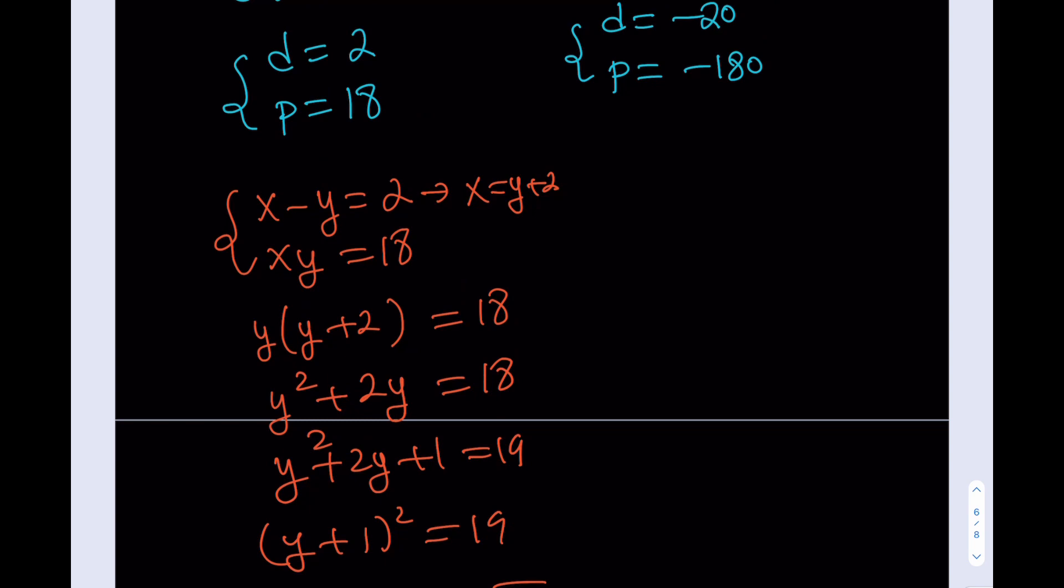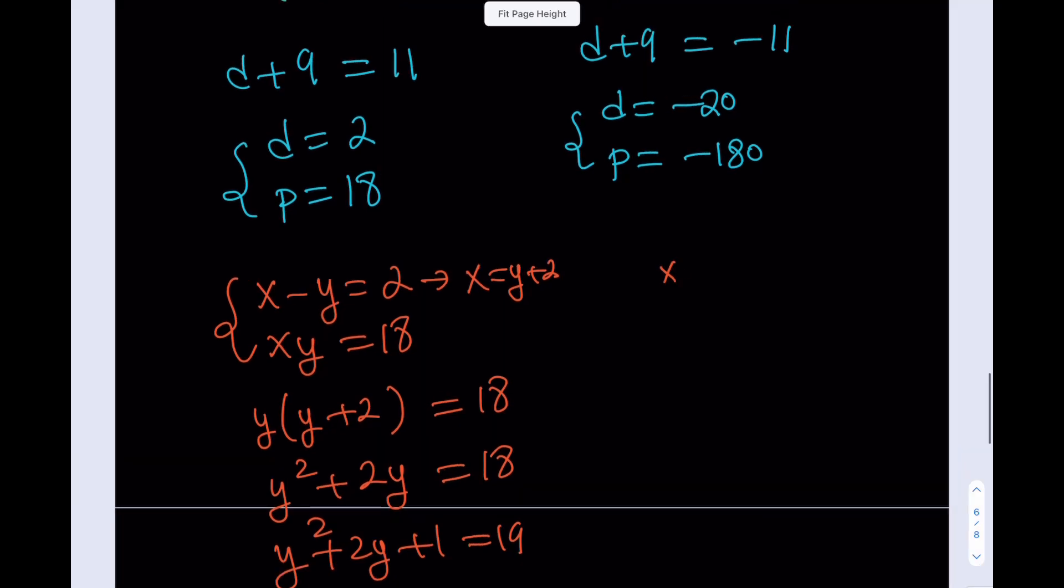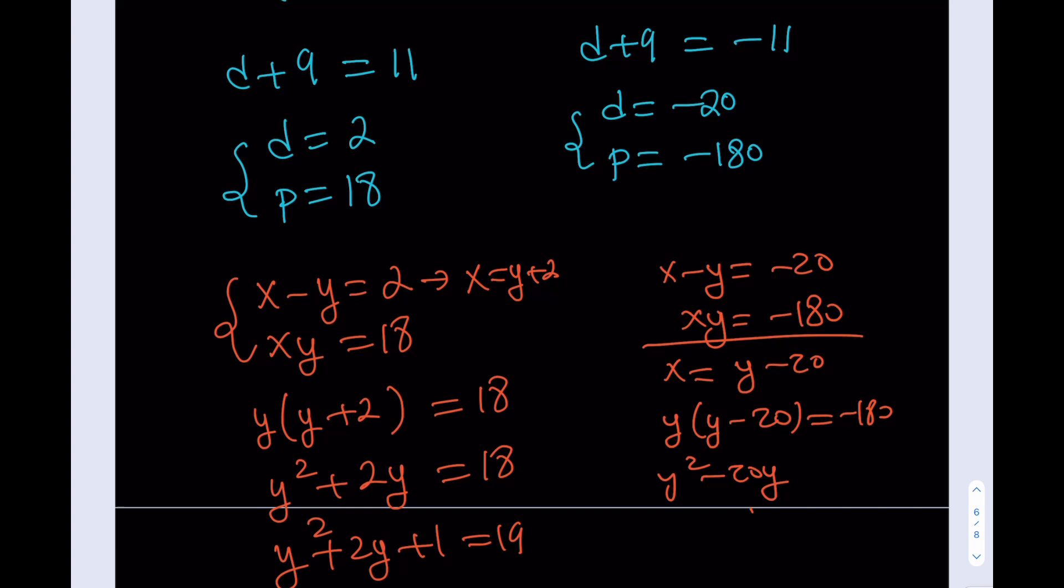How about this one? This one is going to give you x minus y equals negative 20 and xy equals negative 180. If I go ahead and substitute x, replace x with y minus 20, that's going to look like y times y minus 20 equals negative 180. From here, I should be getting y squared minus 20y. You know the rest of the story. Basically, you're not going to get real solutions from here, just like the first method.